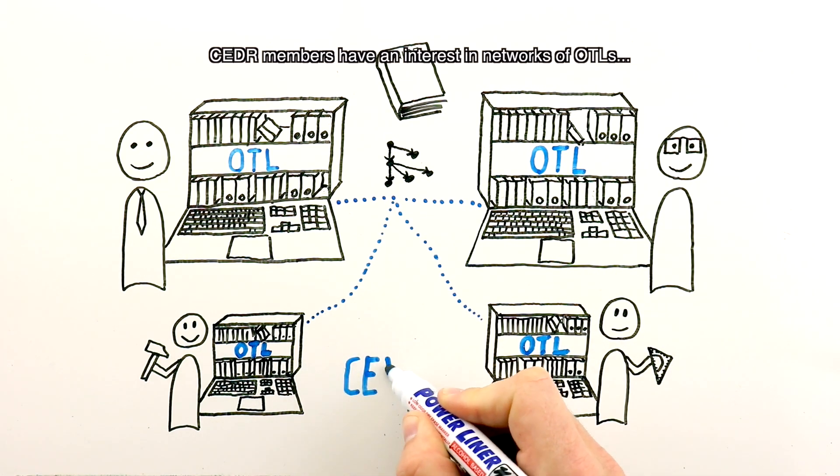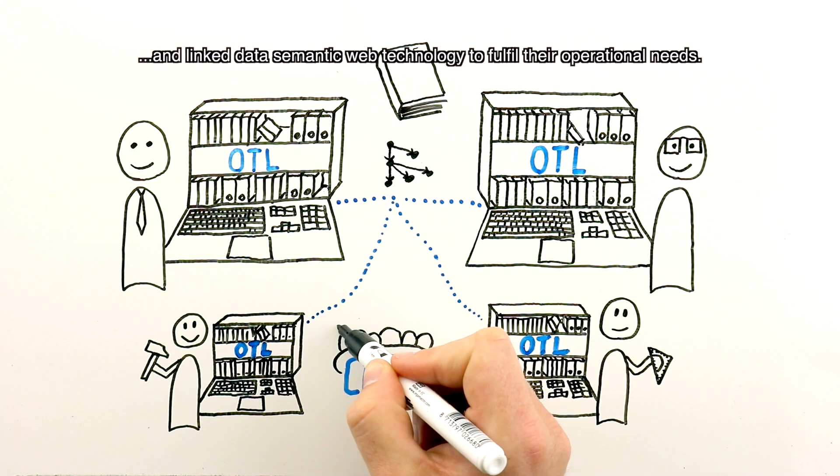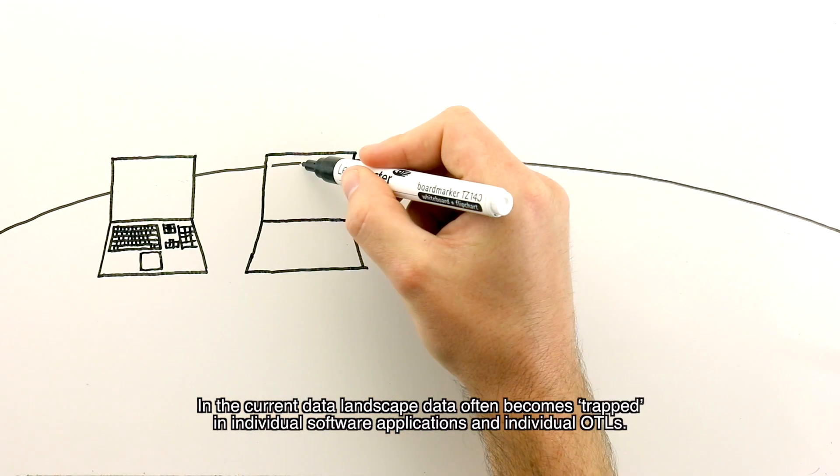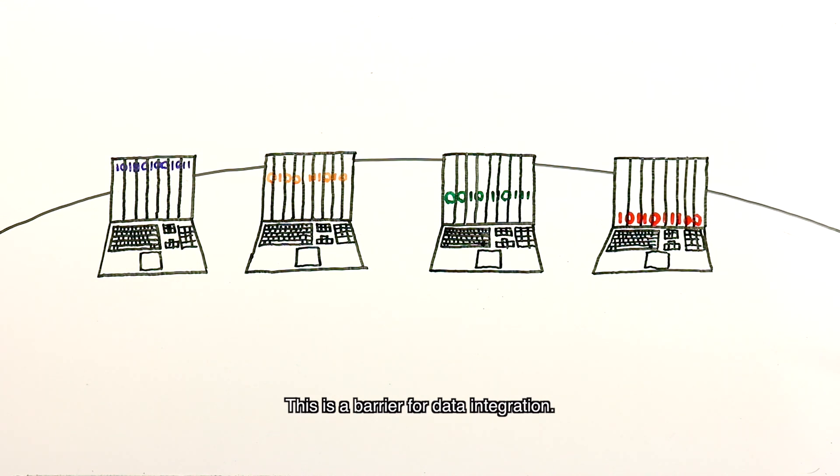CEDR members have an interest in networks of OTLs and linked data semantic web technology to fulfill their operational needs. In the current data landscape, data often becomes trapped in individual software applications and individual OTLs. This is a barrier for data integration.